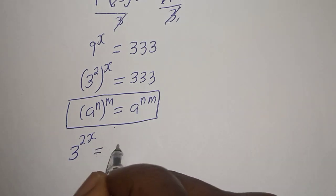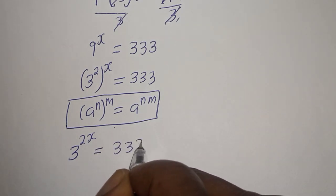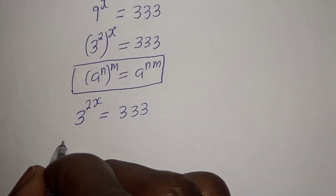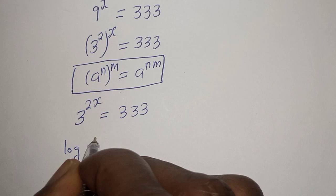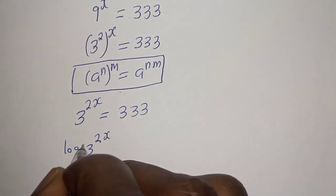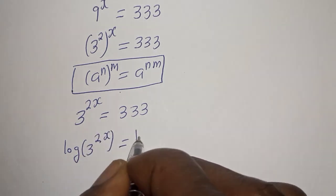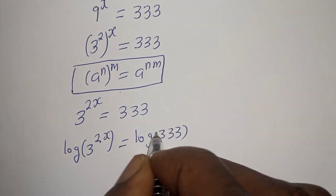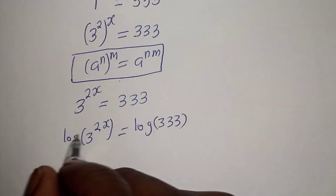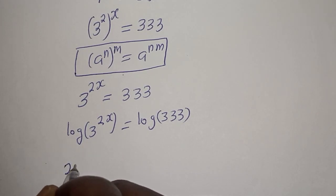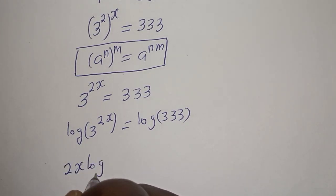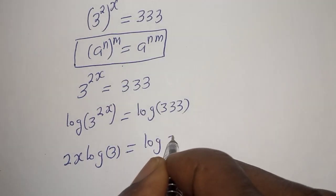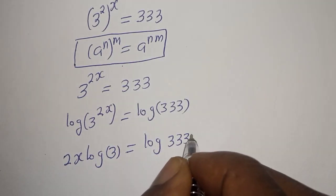From here we can take the log of both sides: log of 3 raised to power 2s is equal to log of 333. Applying the log power rule, we get 2s times log 3 equals log 333.